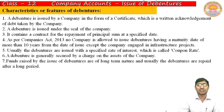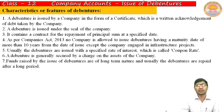Now let us discuss the characteristics or features of a debenture. First, a debenture is issued by the company in the form of a certificate, which is a written acknowledgement of debts taken by the company. Second, a debenture is issued under the seal of the company — without the seal, a certificate cannot be considered a valid document. Third, it contains a contract for the repayment of the principal sum at a specified date.